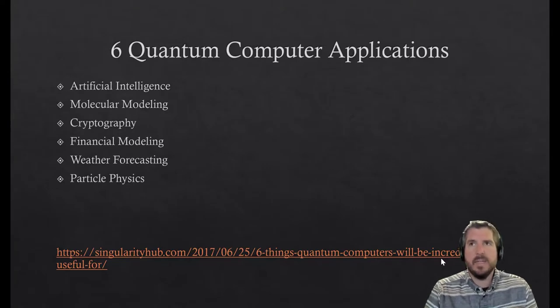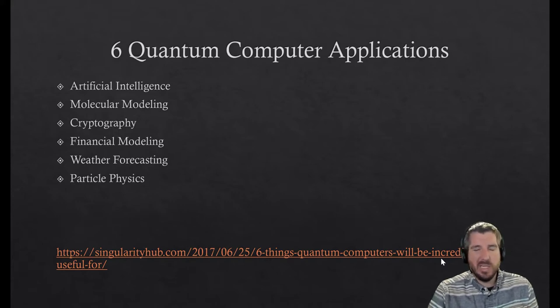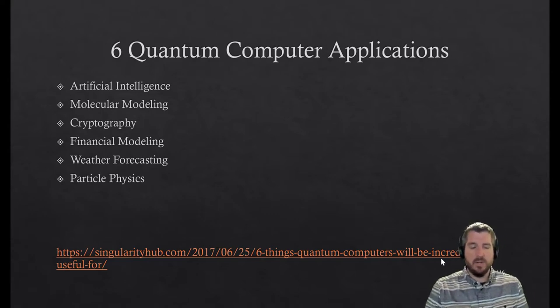Alright, so now that you sort of get the idea, you've watched a video on quantum computing. Remember, the big thing here is that quantum computers don't really use zeros or ones—they use what's called a superposition between the two. And the big idea is that if you can build a really powerful quantum computer, it can do calculations and very specific things in general that regular computers just can't do.